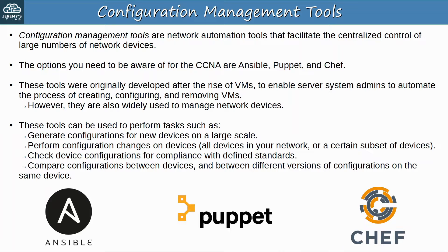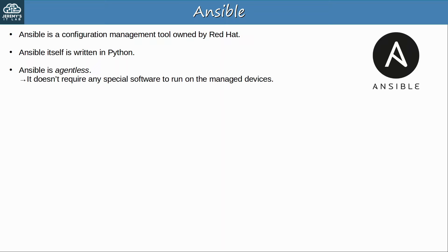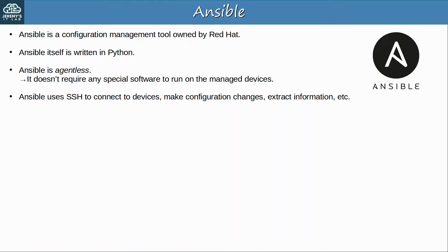First up, Ansible. Ansible is a configuration management tool owned by Red Hat, famous for Red Hat Linux. Ansible itself is written in Python. The other two — Puppet and Chef — are written in Ruby. Ansible is agentless, meaning it doesn't require any special software to run on the managed devices. Instead, Ansible simply uses SSH to connect to devices, make configuration changes, extract information, etc. This is a big advantage of Ansible which makes it very versatile, and it's probably the reason that it is the most popular choice for network device configuration management.